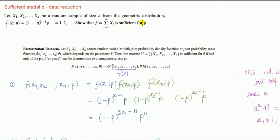For the parameter p, the geometric distribution has only one parameter denoted by p. Instead of using the definition to find the sufficient statistic, we can use the factorization theorem, and what it says is we